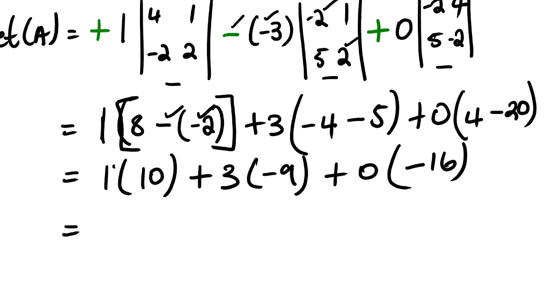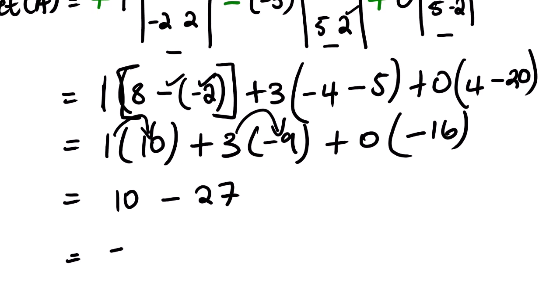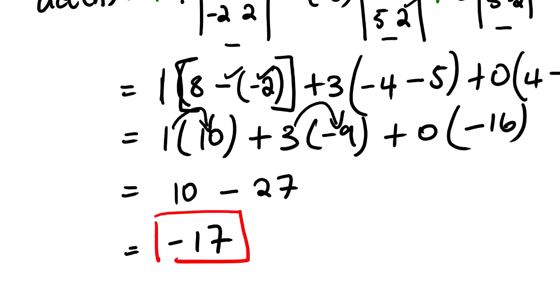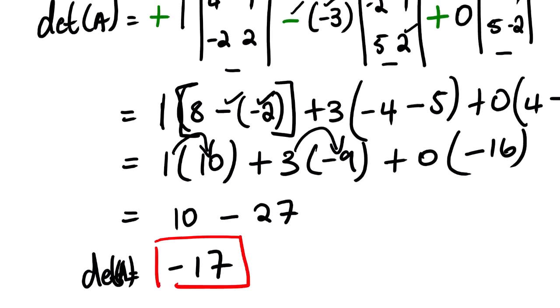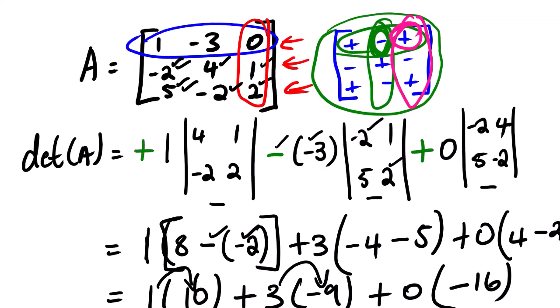From here, one multiplied by ten is ten. Negative three multiplied by negative nine gives negative twenty-seven — wait, actually negative nine gives negative twenty-seven. And zero multiplied by sixteen is simply zero. So ten minus twenty-seven is negative seventy. This is the determinant of matrix A. As a note: if another person uses row number two, the determinant will still be negative seventy.